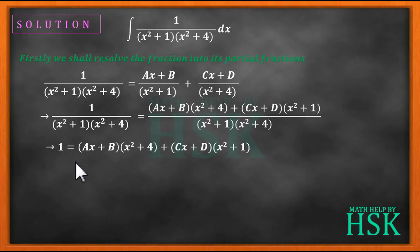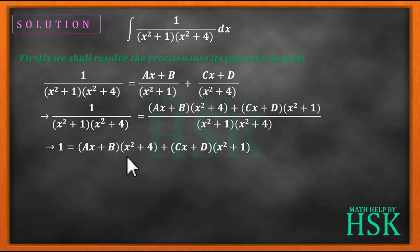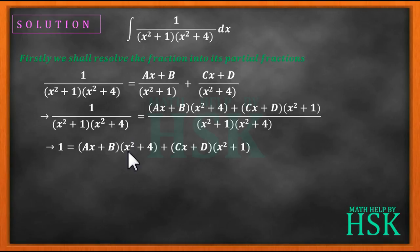We get 1 = (Ax + B)(x² + 4) + (Cx + D)(x² + 1). To solve this, we have to apply the coefficient comparison method — we have no other method to solve this question.